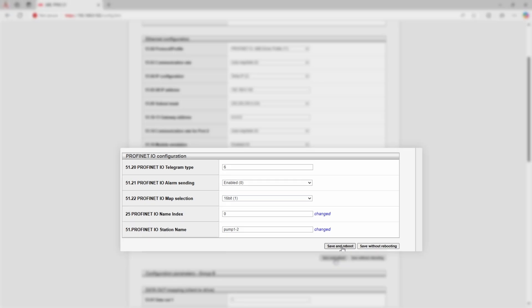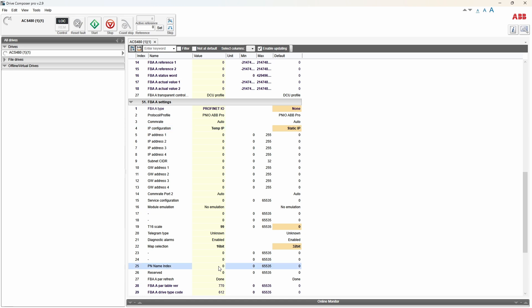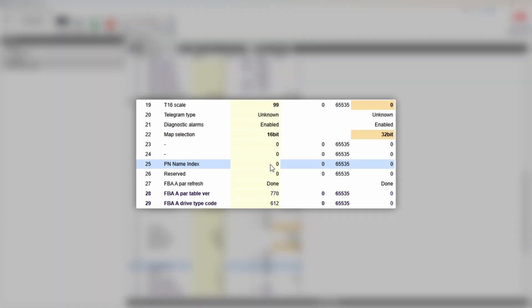Okay, back to original me. By predefined name with a variable index, the static part of the name would be ABB drive hyphen, and the variable index comes from parameter 25 PN name index. Let's say it'll be 2.